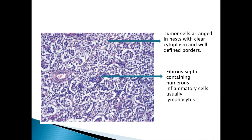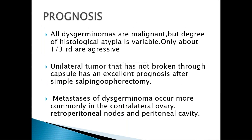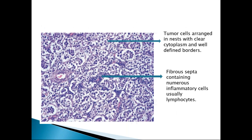In this microscopic picture of dysgerminoma, the tumor cells are arranged in a nesting pattern. The dark blue color represents the nucleus, which is surrounded by clear cytoplasm. These cells are slightly enlarged with clear cytoplasm and centrally placed hyperchromatic nuclei. Between the nests, there are fibrous septa filled with lymphocytes — usually T-lymphocytes — because T-lymphocytes have the capability to destroy neoplastic cells.